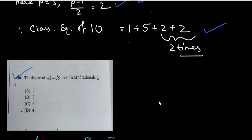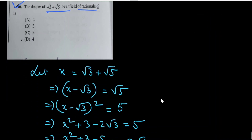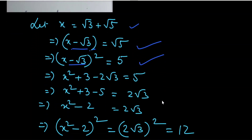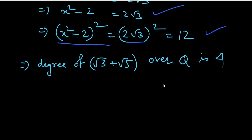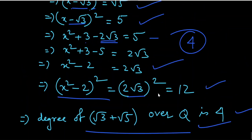The next question asks for the degree of √3 + √5 over the field of rationals. If we let x = √3 + √5, then x - √3 = √5. Squaring both sides gives (x - √3)² = 5, so x² + 3 - 2√3·x = 5. Since an irrational is still present, we isolate and square again to get (x² - 2)² = (2√3)² = 12. The resulting polynomial has degree 4, so the degree of √3 + √5 over Q is 4.